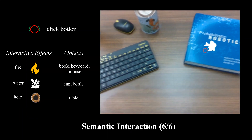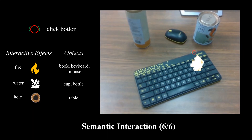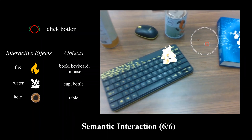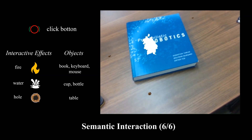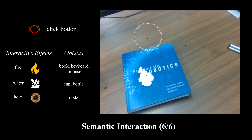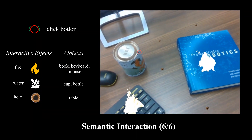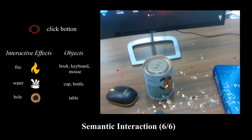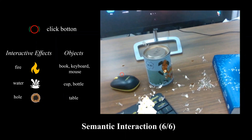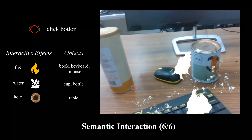This video illustrates semantic interaction in augmented reality. The red circle simulates the user's click command. Clicking different objects presents different interaction effects.